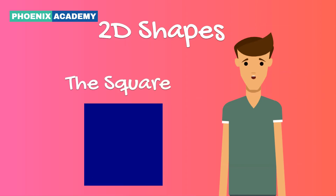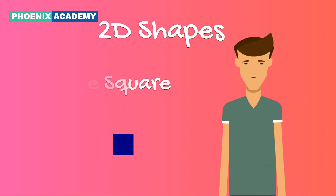This is a square. A square has 4 corners and 4 sides like a rectangle. All 4 sides are of the same length. This is a square.